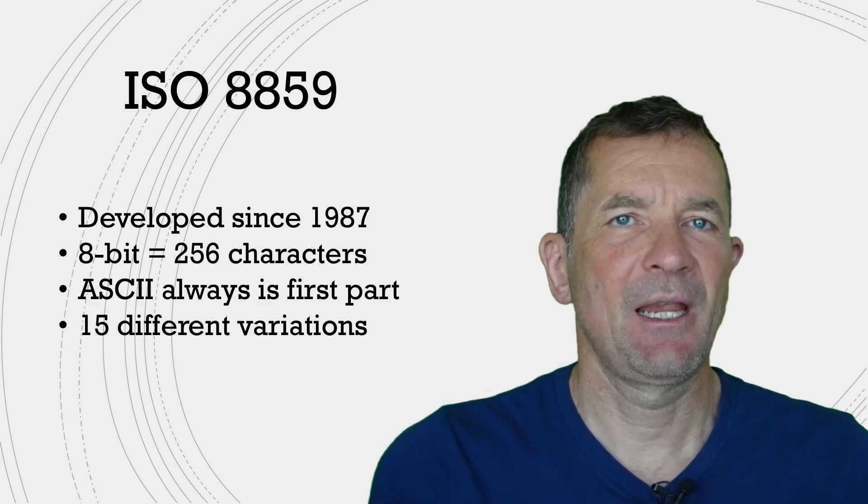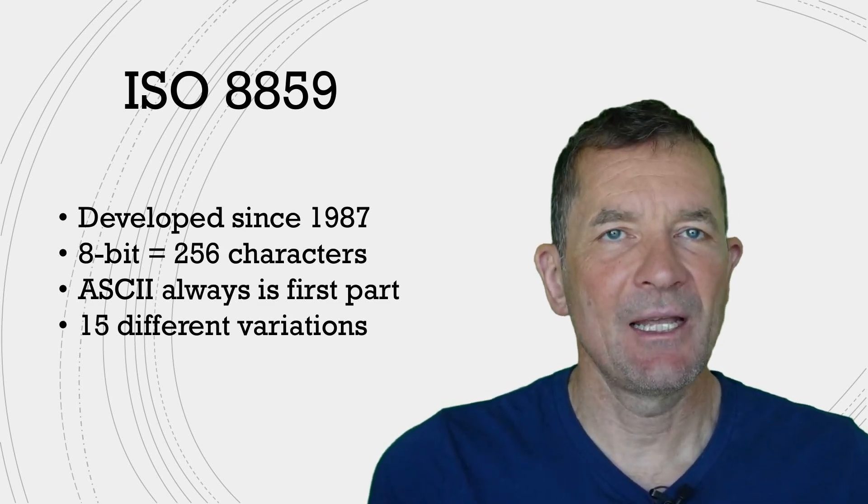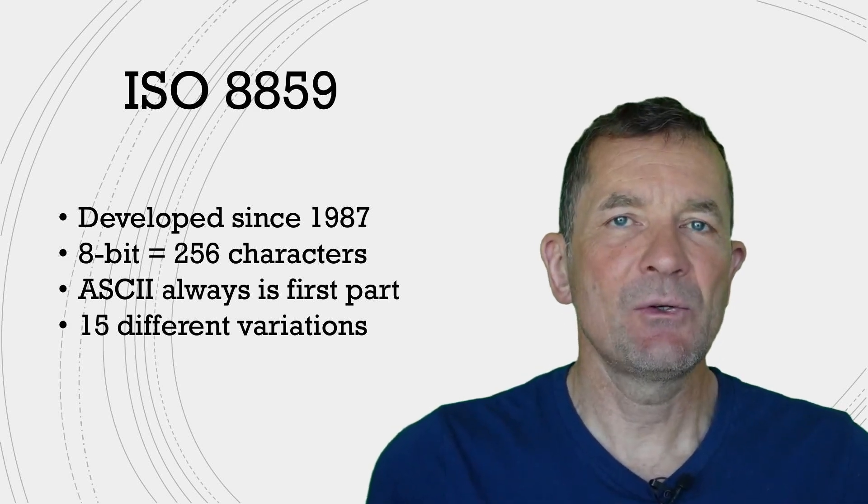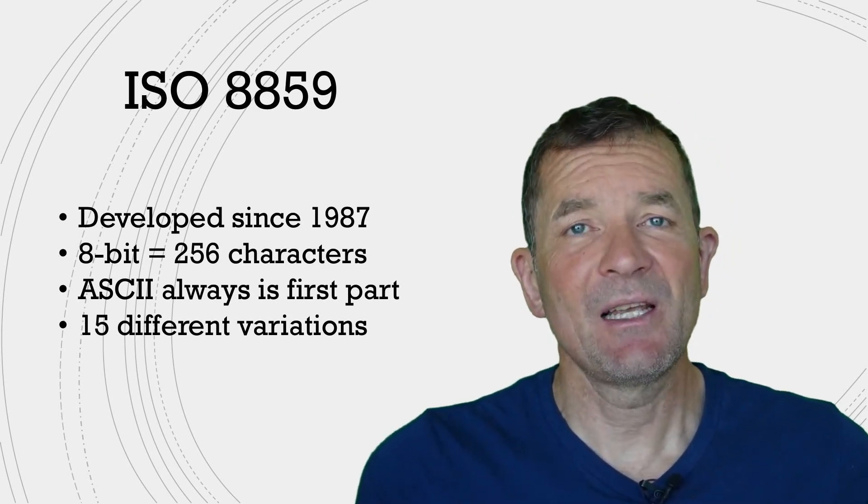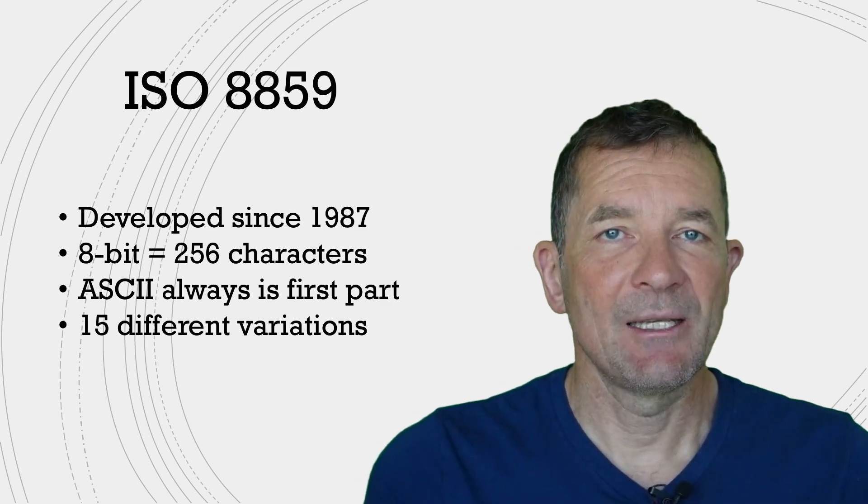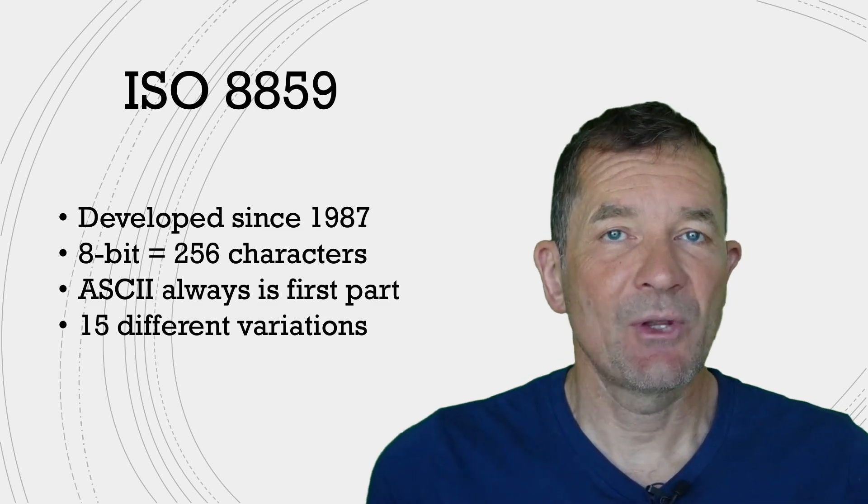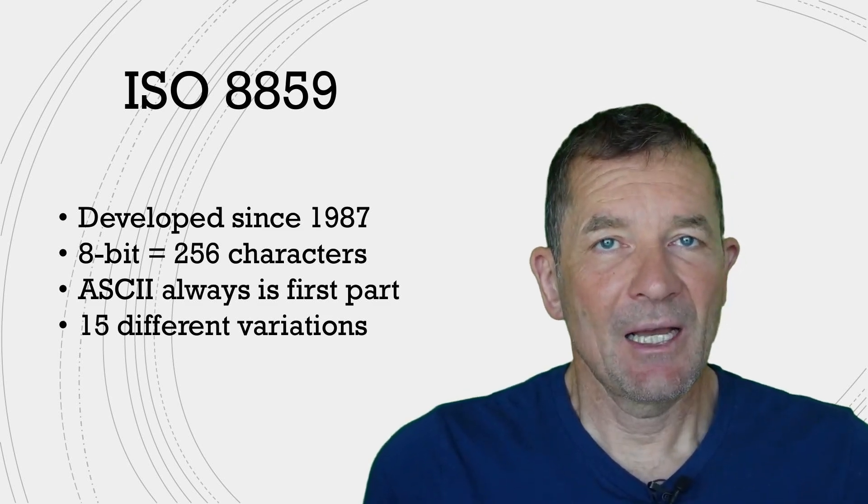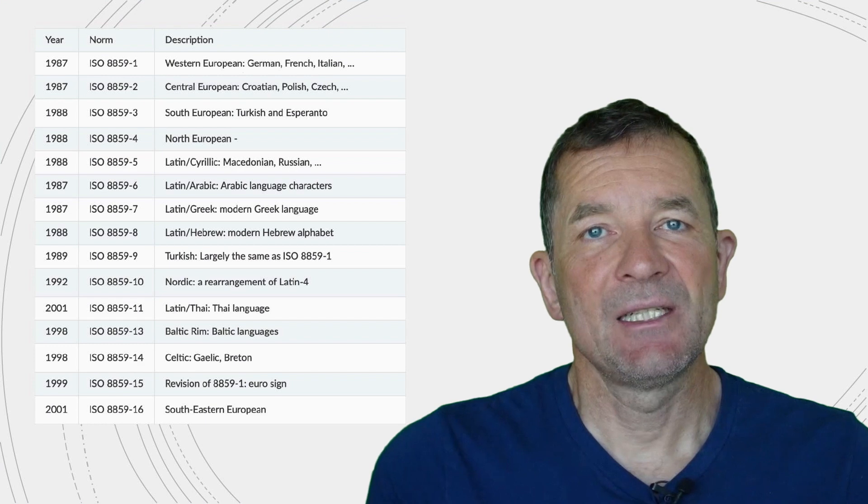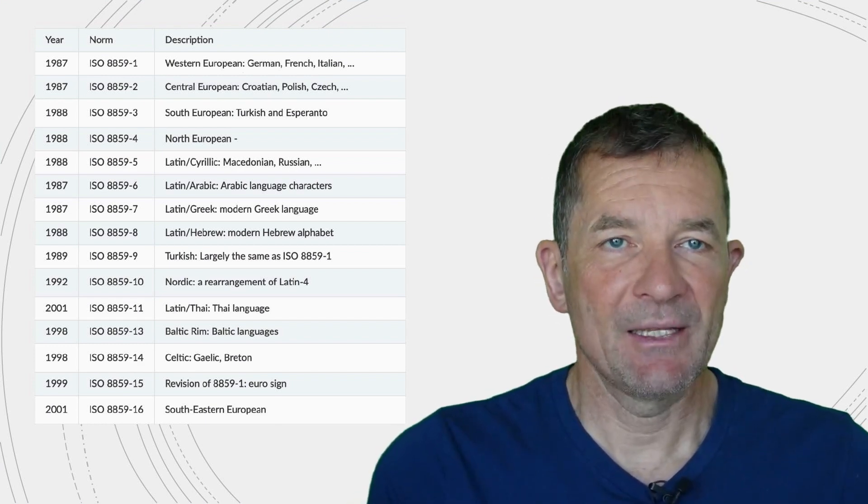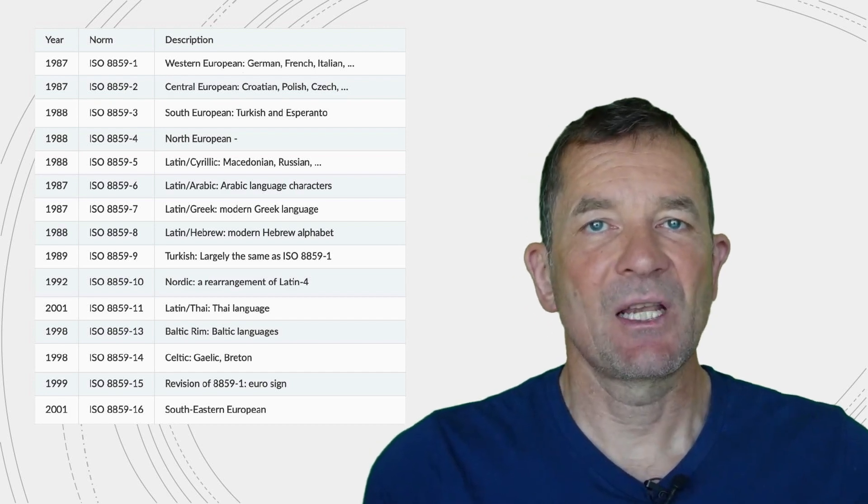It's an 8-bit character set, meaning that it can represent 256 characters. And of those, the first 127 always are ASCII. And since you now only have 127 characters where you can add new characters, what ISO 8859 did was to add a whole bunch of variants, and these have consecutive numbers.